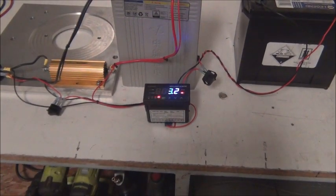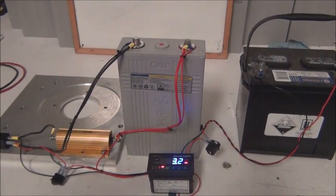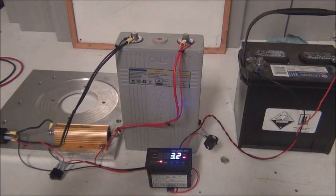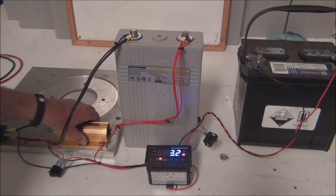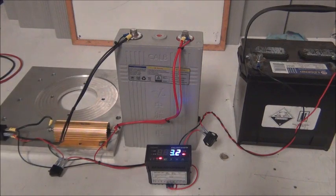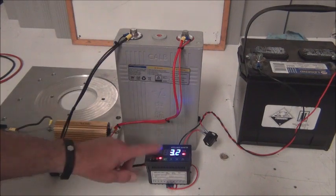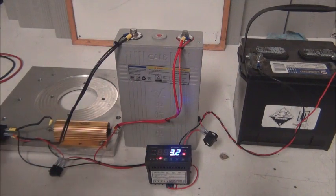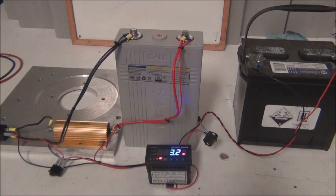So I hope that kind of gives you an idea of another way to bottom balance. And the only component that's not going in your conversion that you would have to purchase would be this load. And there's other things that you could use for a load. No additional cost for the relay or even the switches. You'll probably be using those in your conversion. So hope you enjoyed the video.